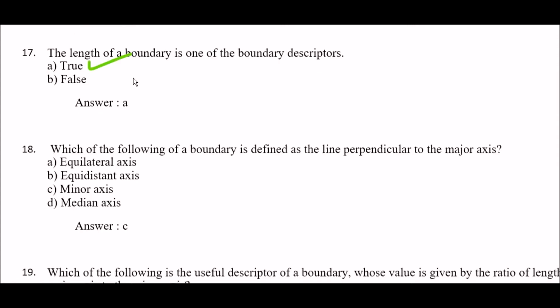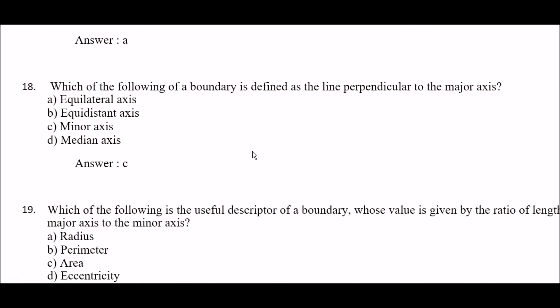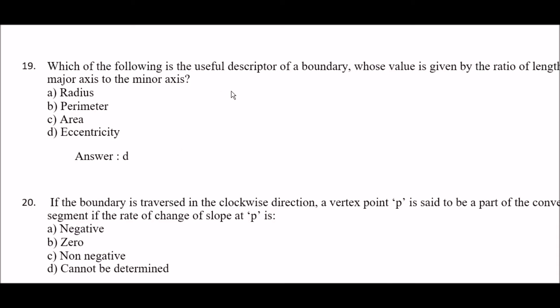Next question: which of the following of a boundary is defined as the line perpendicular to the major axis? Option A: equilateral axis, option B: equidistant axis, option C: minor axis, option D: median axis. The right answer is option C — minor axis.